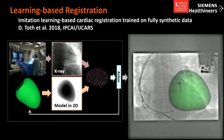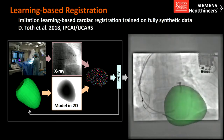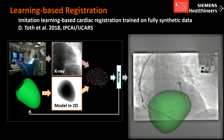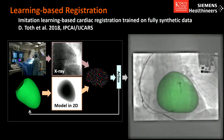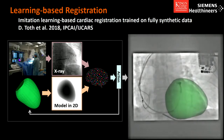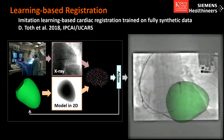What you see here is our network from last IPCAI that is able to register a cardiac model to an interventional cardiac x-ray image. This happens in a way where clinicians acquire the x-ray image, then a segmented prior model from MR or CT data is taken and projected out into the same plane as the x-ray image was taken in.